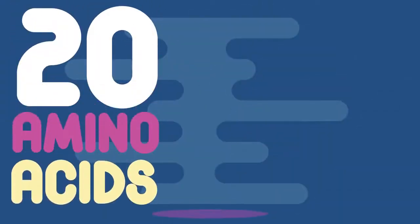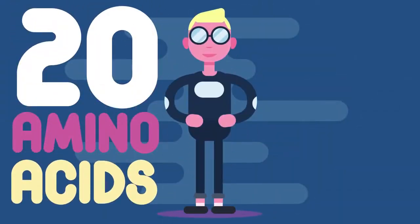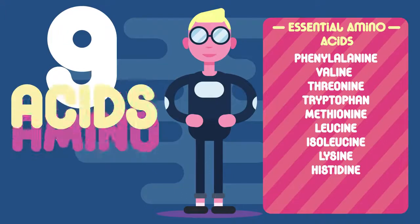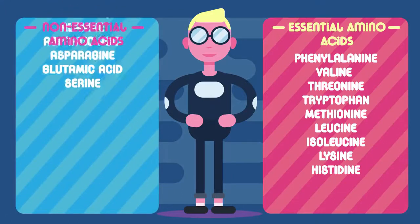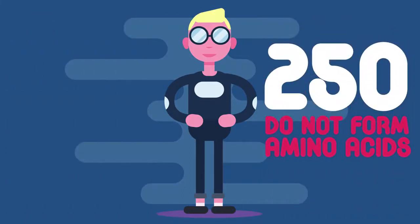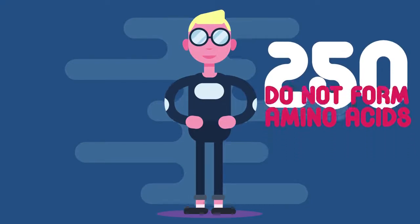There are 20 amino acids that make up our body's proteins. Nine of these we need to take in through our diet as our body cannot manufacture them — these are known as essential amino acids. Our body can, however, manufacture non-essential amino acids. Whilst 20 amino acids build up proteins, there are actually many others that do not form proteins, possibly over 250. They may form sugars, for example.